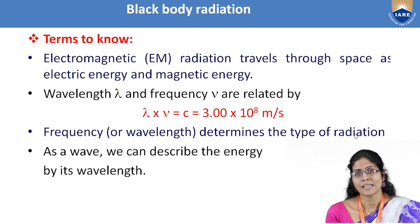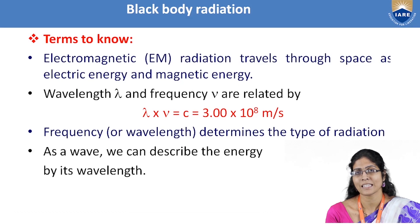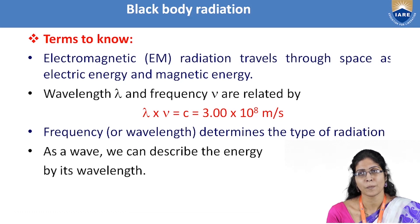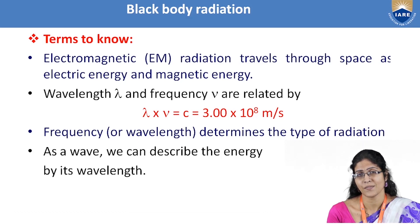Before going into further details, let us have a brief look at the following terms. What exactly is electromagnetic radiation? It is radiation which, when it travels through space, has both electric energy and magnetic energy. The relationship between wavelength lambda and frequency nu is given by nu times lambda equals the velocity of light, which is 3 times 10 to the power of 8 meters per second in free space. The frequency or wavelength determines the type of radiation, and when studying radiation as a wave we can describe the energy by its wavelength.